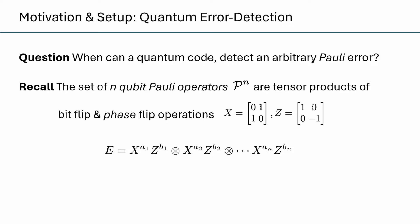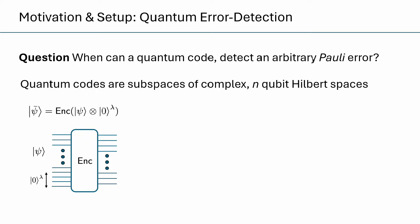In that context, the set of Pauli errors, or n-qubit Pauli operators, are nothing more than tensor products of single-qubit Pauli operators, which are two-by-two matrices, also known as the bit flip and phase flip operations, X and Z. In turn, a quantum error correction or error detection code is just a subspace of some complex, high-dimensional Hilbert space.